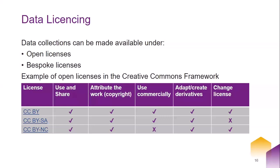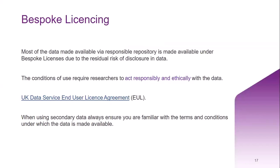Most data made available through responsible repositories such as ours is made available under bespoke licenses, as there may be a residual risk of disclosure in data. For example, a data owner might have removed identifiable information, but there might be something remaining in the data which, if combined with other information, may disclose someone's identity. The conditions associated with bespoke licenses ensure that researchers act responsibly and ethically with the data. The UK Data Service end user license agreement is one example of the bespoke licenses we have. If you plan to use secondary data, always make sure you are familiar with the terms and conditions under which the data is made available.